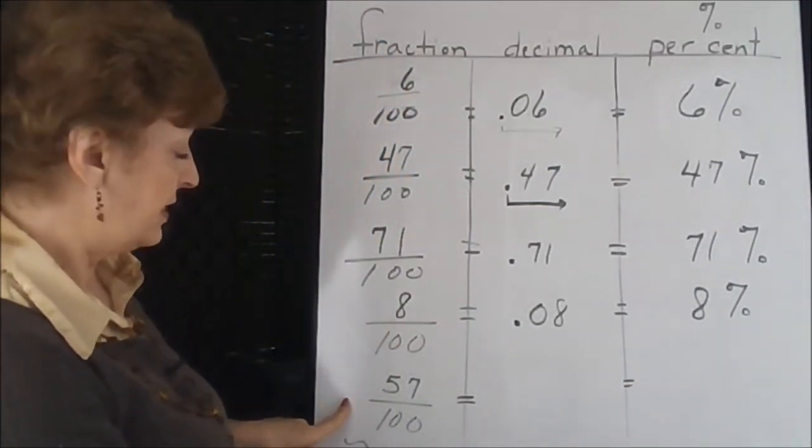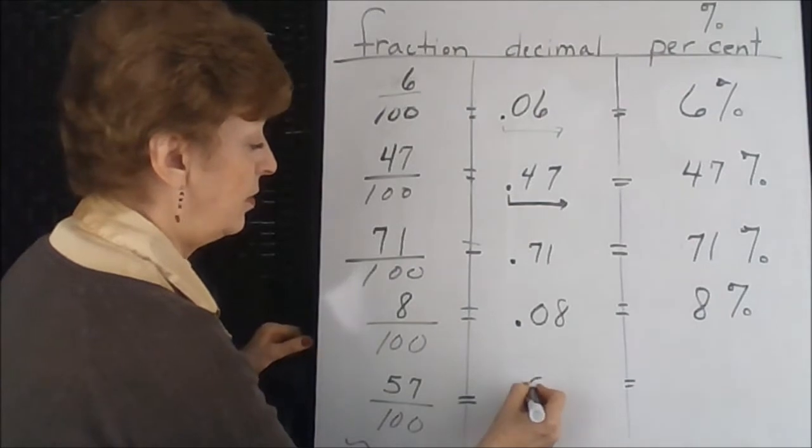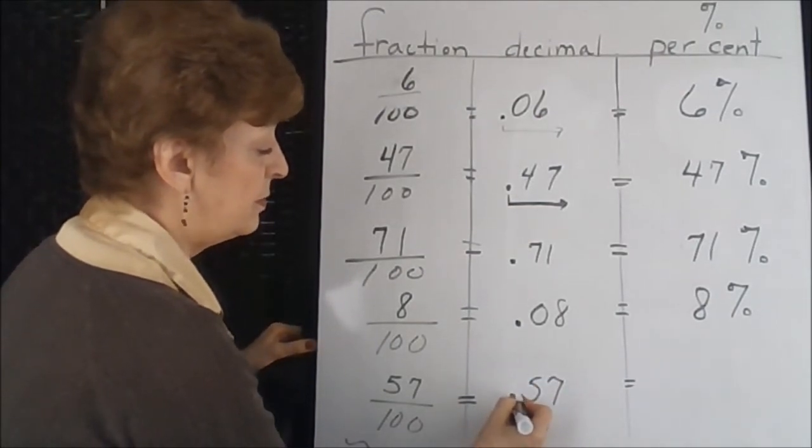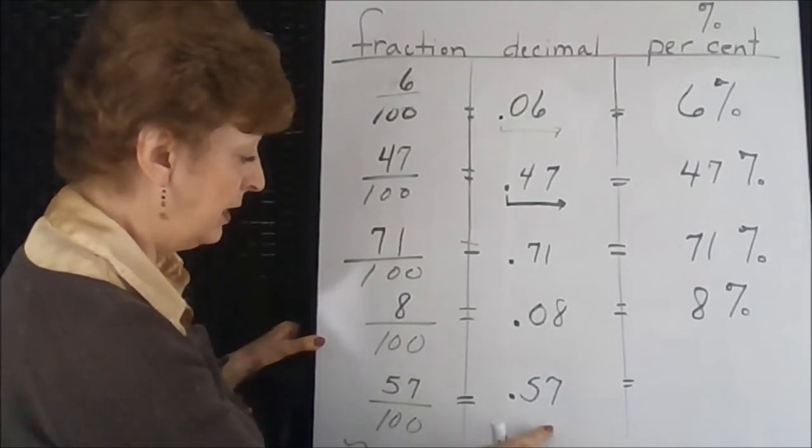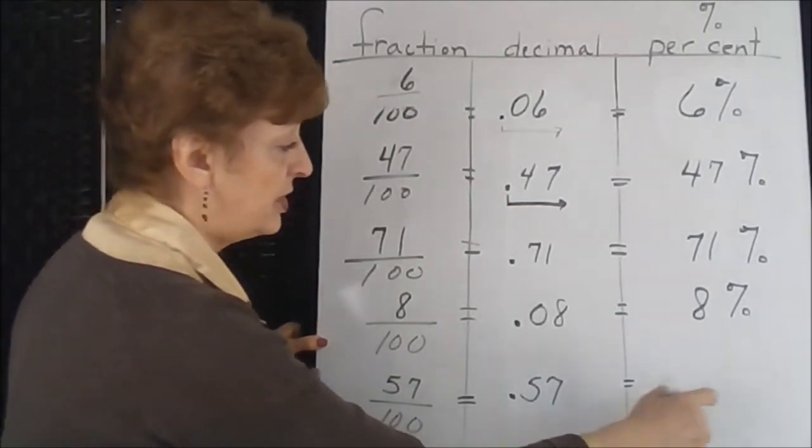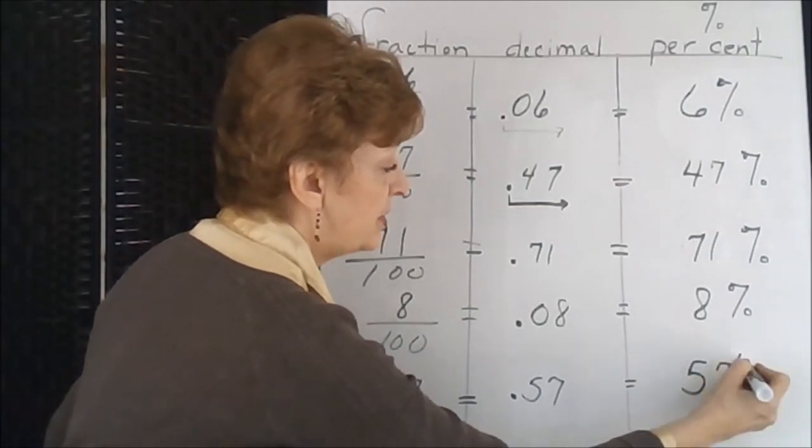The last one, fifty-seven hundredths. If the decimal point is placed here, the seven ends up in the hundredths column. To change it to a percentage, fifty-seven percent.